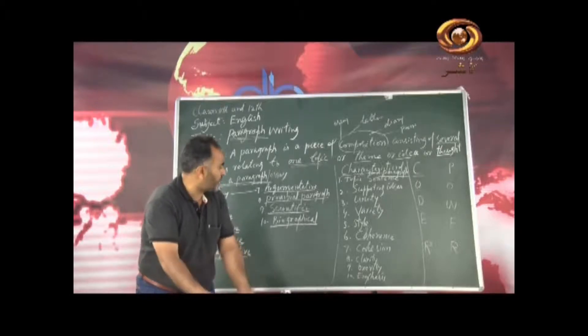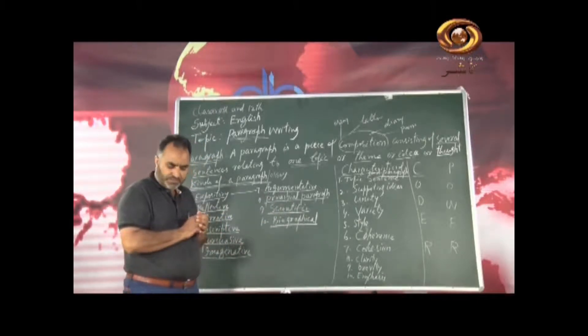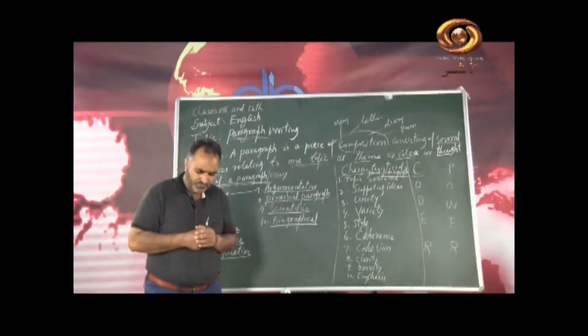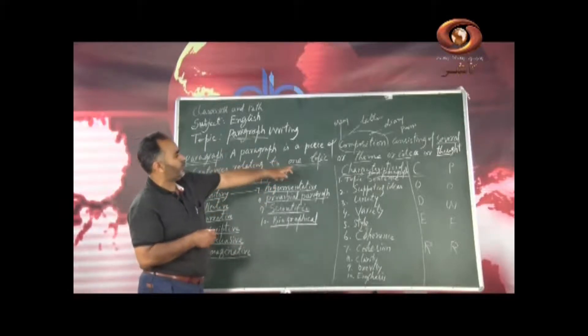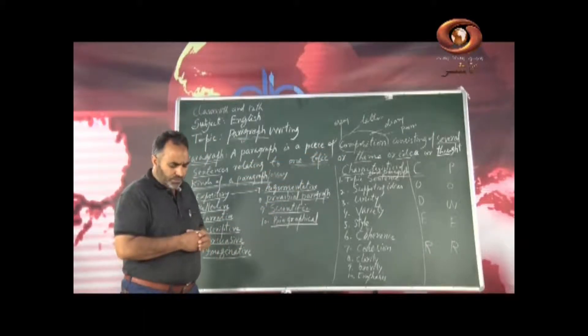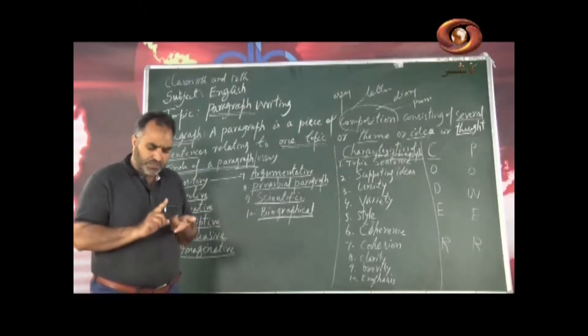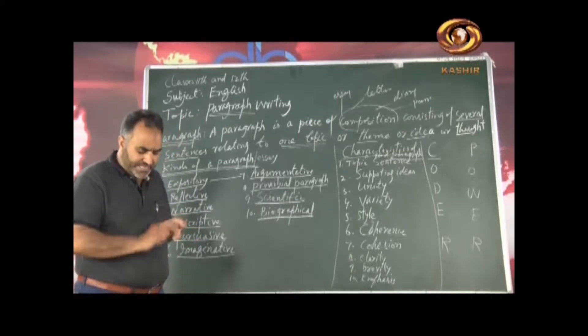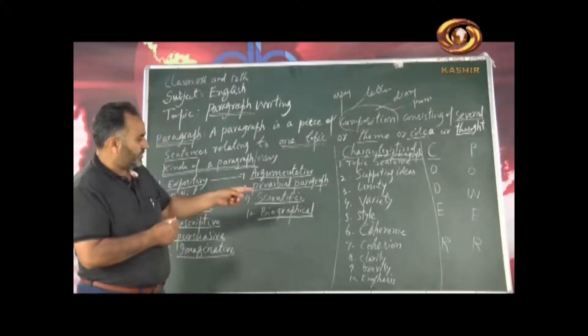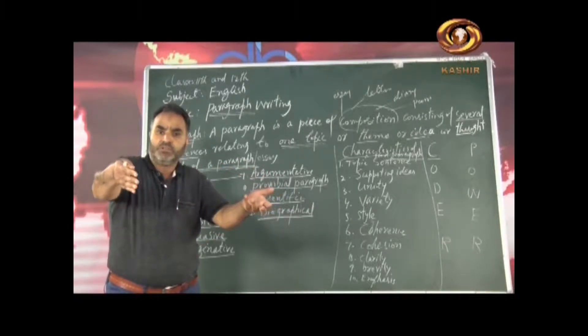Now next thing that we should have in paragraph is supporting ideas. So supporting ideas means it must contain specific details, examples and facts to support the topic sentence. You can give examples. Then it must have unity. As I said it should relate to one topic, one theme, one idea, one thought. And then it should have variety. So by variety we mean that it refers to a range of vocabulary and sentence structures you use in your writing. It must be different. And then style. Style depends upon important considerations of audience for whom you are writing the paragraph and purpose. What is your purpose behind writing such a paragraph.